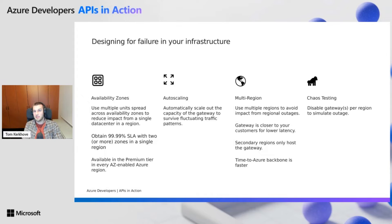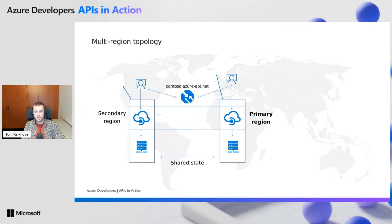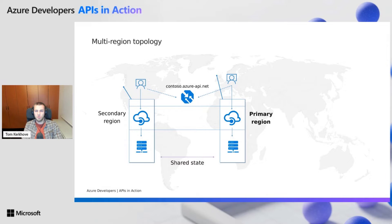When you design for failure, you also want to test for failure. You can do chaos testing by disabling gateways in various regions and see how your traffic pattern reacts. This helps you simulate Azure outages in certain regions. You can see what it looks like to have an API Management instance with two regions where, when a customer sends a request to contoso.azureapi.net, it uses Azure Traffic Manager under the hood to route traffic to the nearest region. If one of those regions goes down, traffic automatically fails over to any of the other available regions.